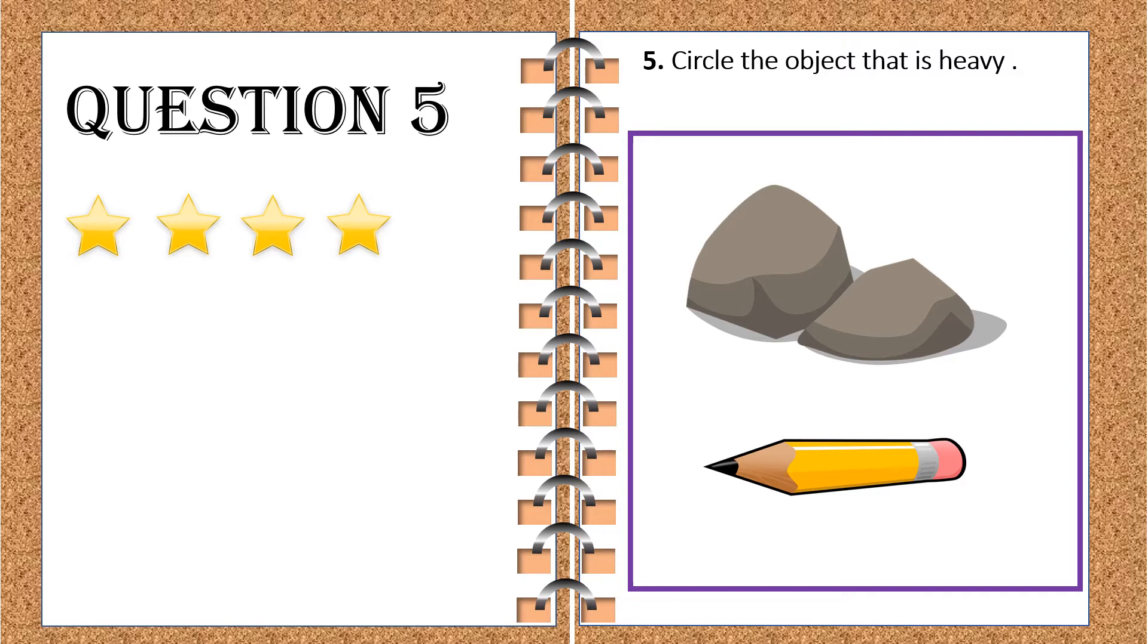Now, let's check our next question, question number five. The question says, circle the object that is heavy. What do you think is heavy? This big rock or a pencil? No doubt. What is heavy? Yes. These rocks are heavy. I'm sure you must have circled the same. Let's give one more star.